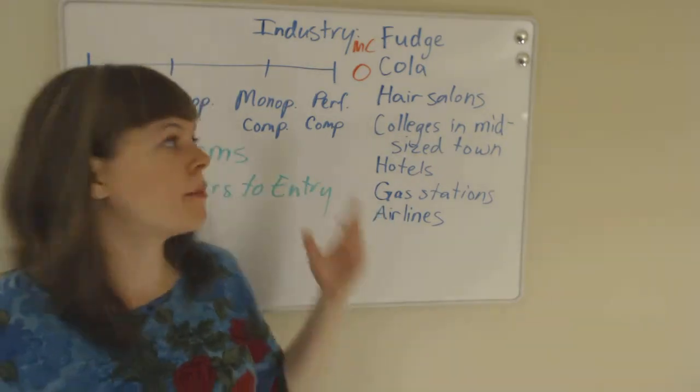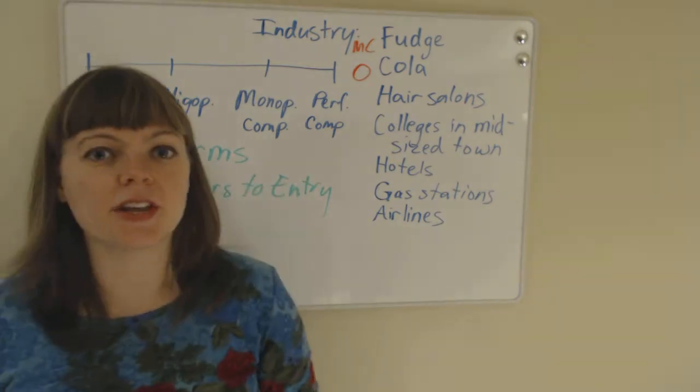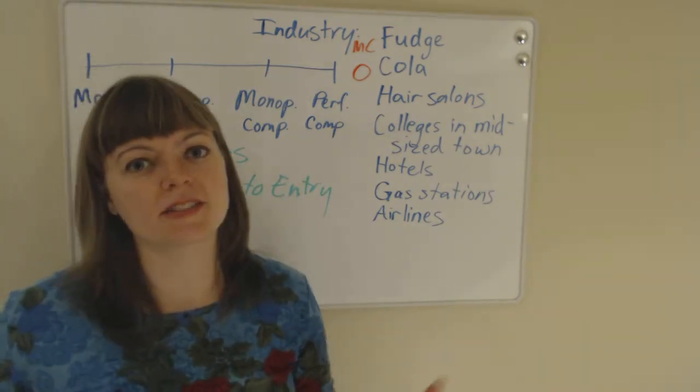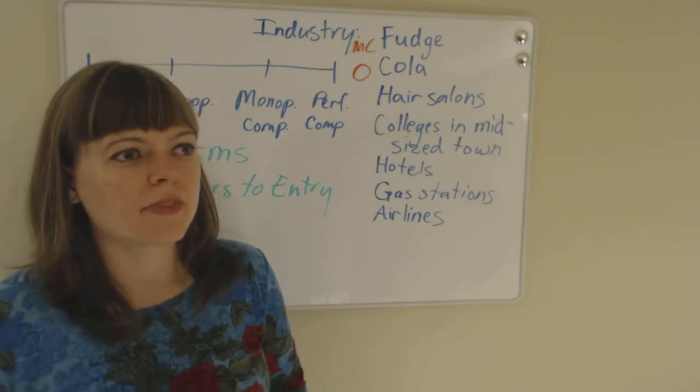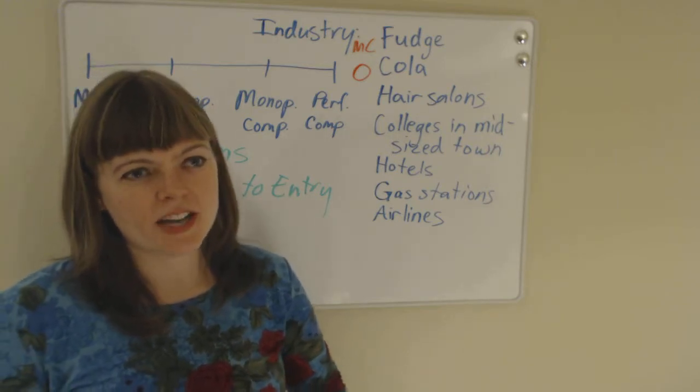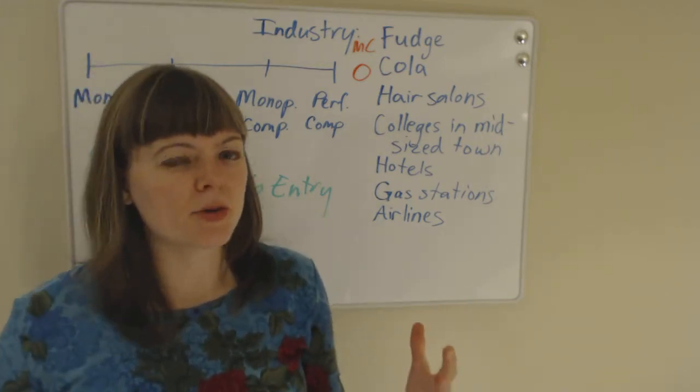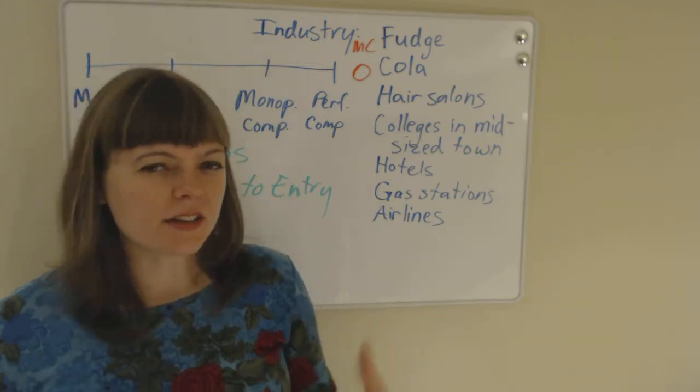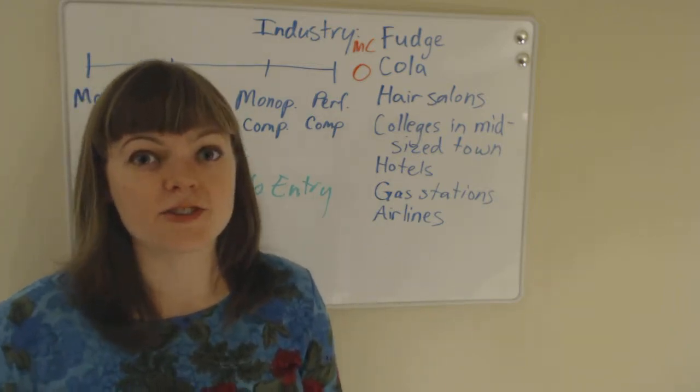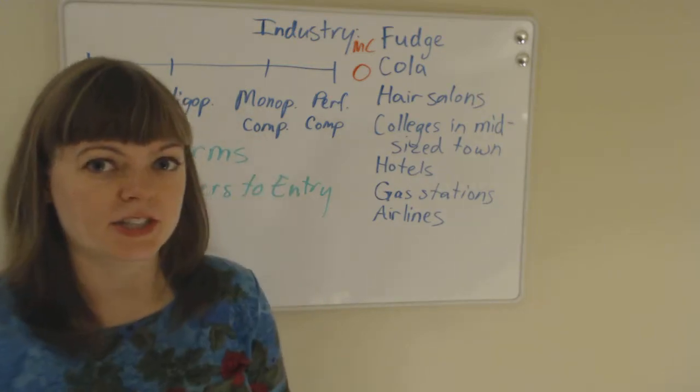Same thing with coffee. Coffee is considered to be a monopolistically competitive industry, even though there's these big players, Starbucks and Caribou. And so thinking about what are the barriers to entry, even though there's Starbucks and Caribou, and those are big firms, there's still not a lot of barriers to new firms entering, which means it's going to be monopolistic competition.